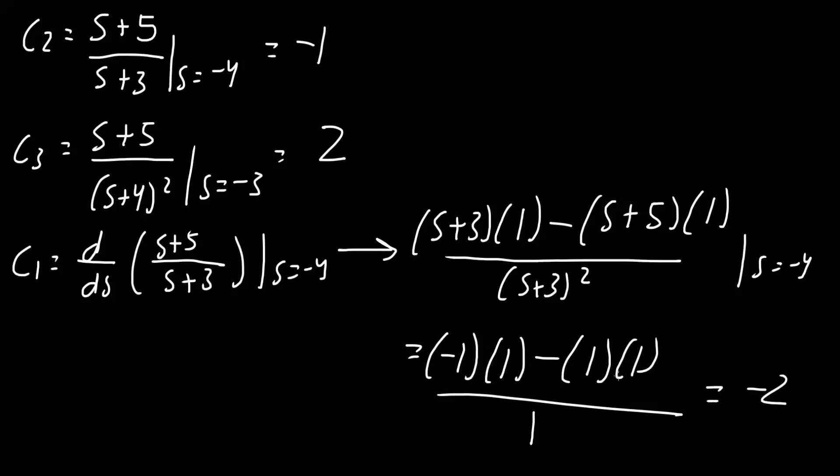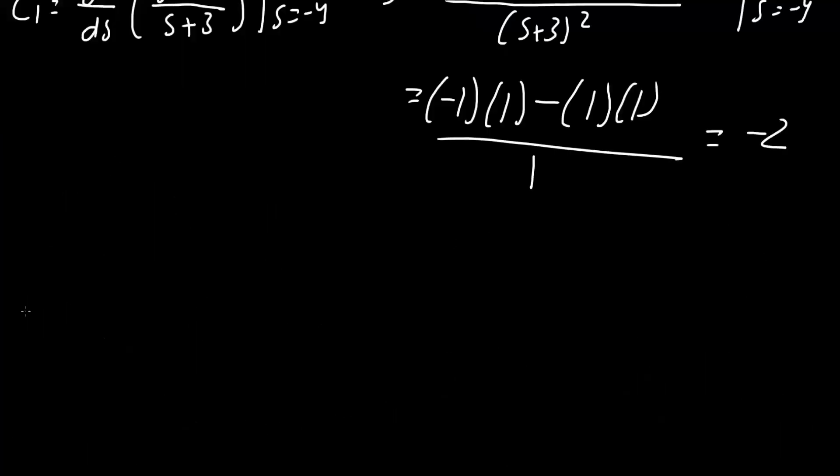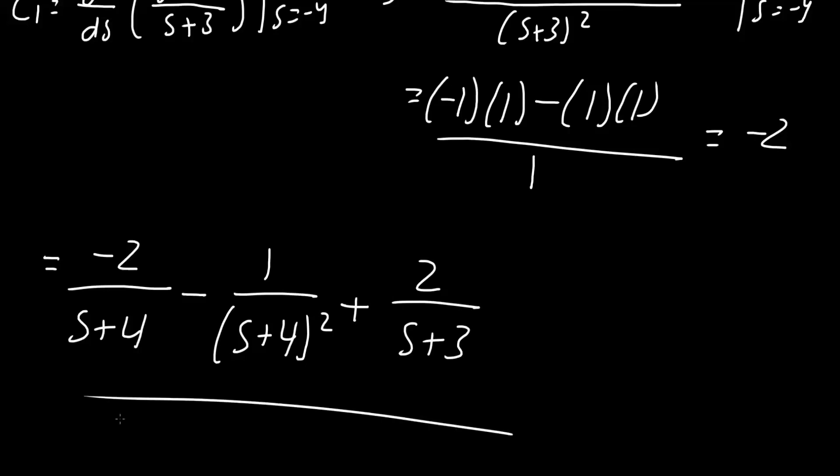And now we simply just plug it back into the original equation. So we plug in C1 here, C2 here, and C3 here. And so we will ultimately get negative 2 divided by s plus 4 minus 1 divided by s plus 4 squared plus 2 divided by s plus 3. And this right here would be our final answer. And that's all we need to do for this problem.